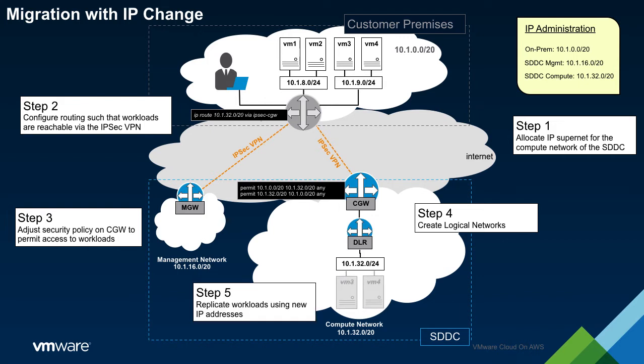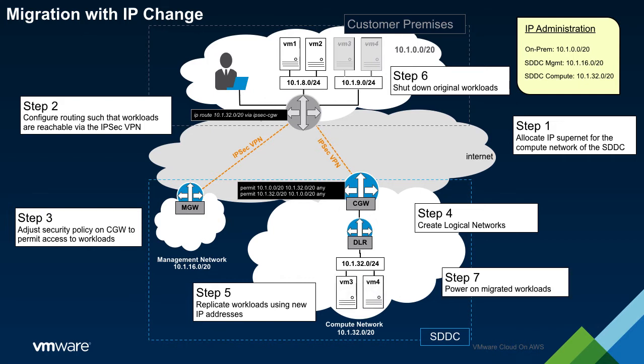Once the workloads have been replicated, we are free to shut down their active counterparts within the on-prem environment, and then to power on the workloads within the SDDC. Since we have changed the IP addresses of these workloads, we must remember to update critical services such as DNS to reflect this change.